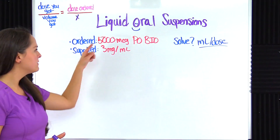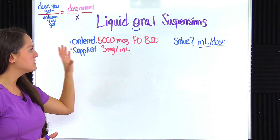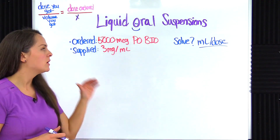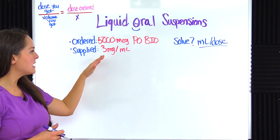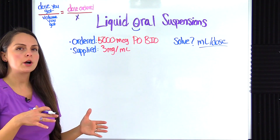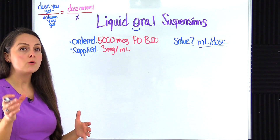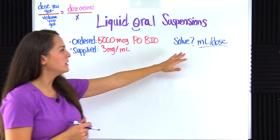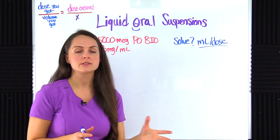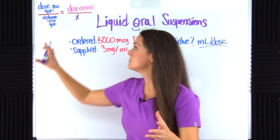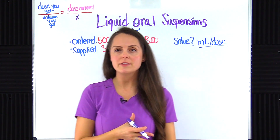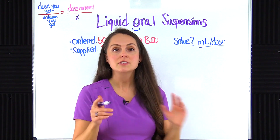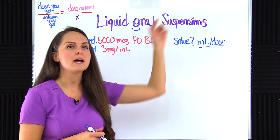Our problem says that we're ordered to give 5,000 micrograms PO BID — by mouth twice a day. We're supplied with a bottle that says three milligrams per mL, so every one mL we pour out should have three milligrams in it, and we need to solve for milliliters per dose. We're going to use the ratio and proportion method, though you can also use dimensional analysis or the desired over have formula method.